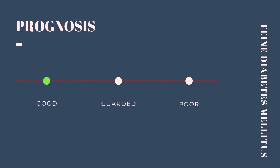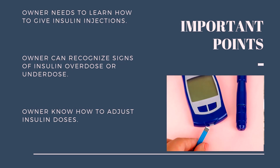The prognosis for many cats with diabetes mellitus is good as long as the disease can be regulated with medications and diets and other ancillary problems can be controlled or resolved. Successful treatment requires that the owner learns to give insulin injections, becomes familiar with the signs of insulin overdose and underdose, and learns how to adjust insulin doses. With dedication on the part of the owner, many diabetic cats live active, normal lives for many years.